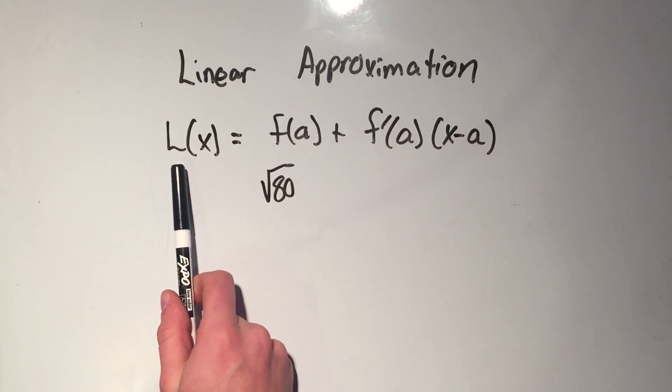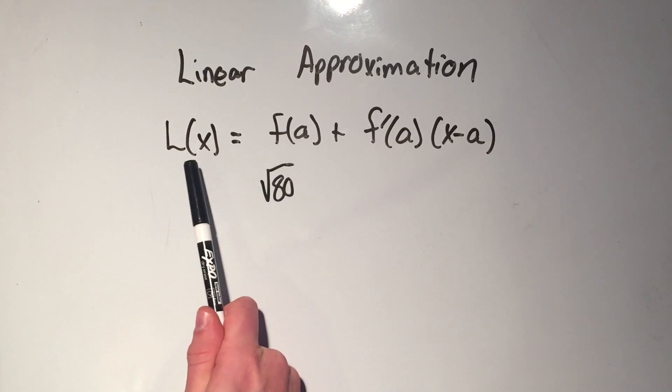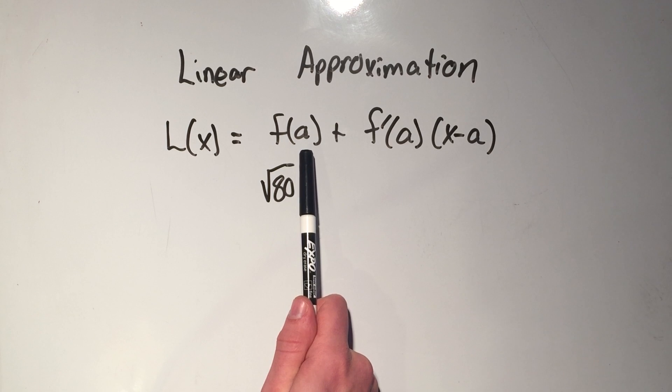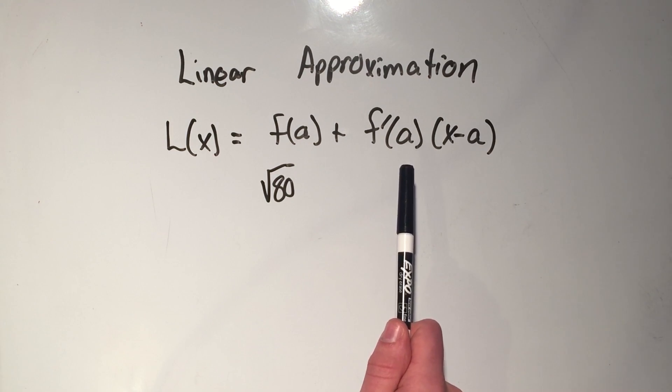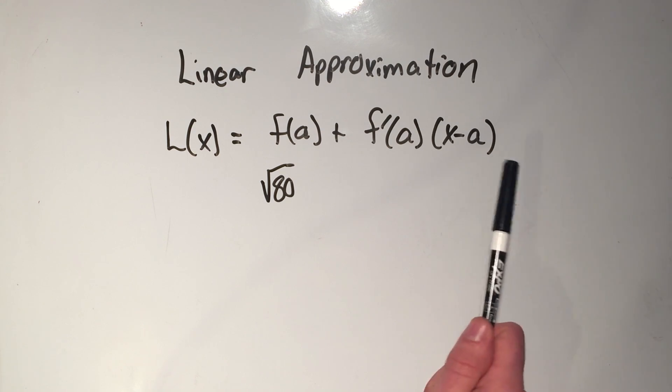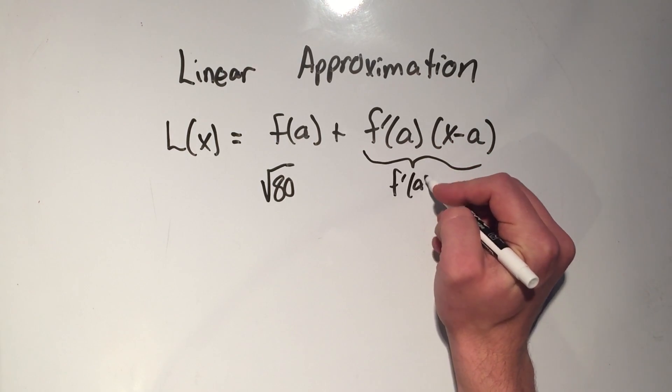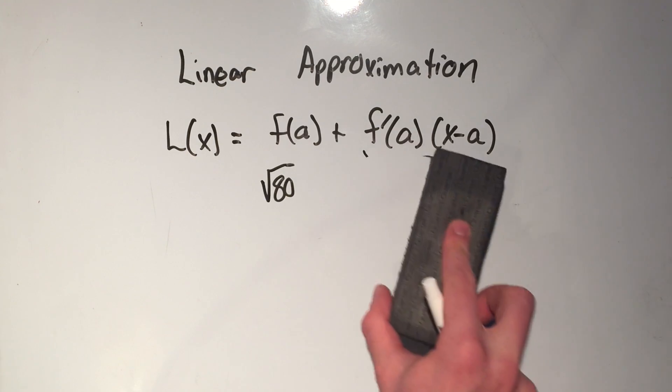So a linear approximation is a function of x, and it goes like this. It says f of a, so your function evaluated at a, we'll talk about what a is in a second, plus your derivative evaluated at a times x minus a. Or you might see this part written as f prime of a delta x, or like the change in x, but this is how I prefer to write it.